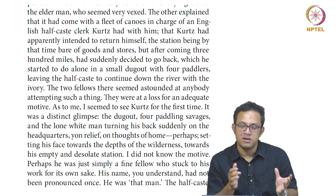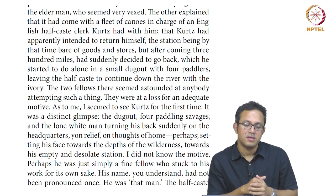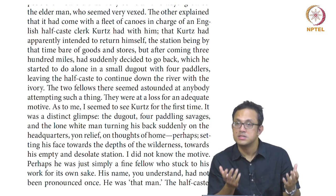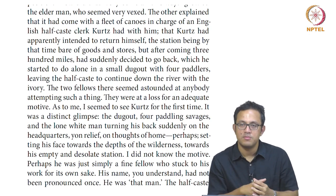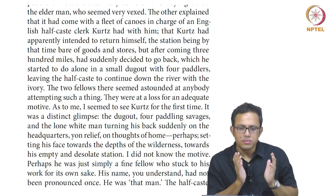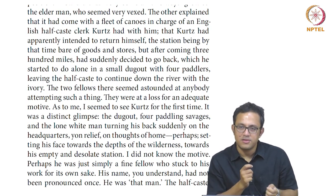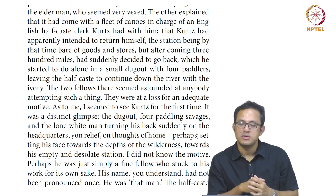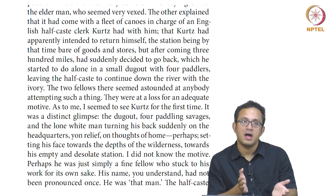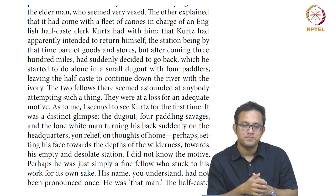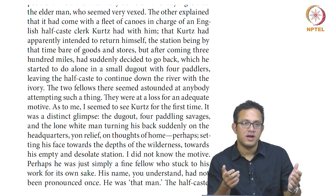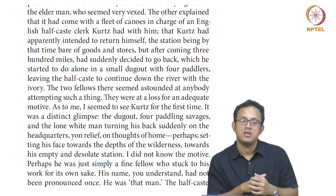Kurtz is what we call in spy fiction and spy cinema today a rogue agent — someone who turns his back on the machinery which historically created him. Kurtz is one of the first examples in British fiction of rogue agents. He is an agent of imperialism, constructed by it, described as its finest soldier and engineered product. But this product has now turned rogue, turning his back on the entire machinery which created him, and now it has become a problem that machinery has to get rid of. Heart of Darkness has deep resonance with geopolitical tensions we have in our world today.